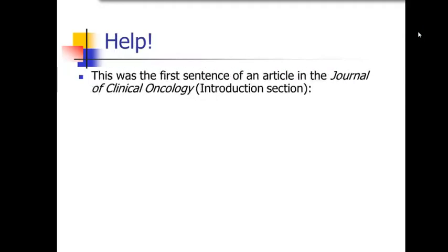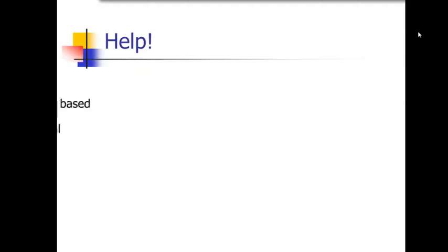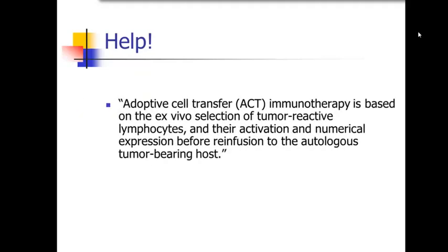I want to start with a sentence that I was reading in an article in the Journal of Clinical Oncology. Now this is one of the top cancer journals out there. And this was the first sentence of the introduction section — where the authors are really supposed to be drawing the reader in. And it reads: 'Adoptive cell transfer immunotherapy is based on the ex vivo selection of tumor reactive lymphocytes and their activation and numerical expression before reinfusion to the autologous tumor bearing host.'